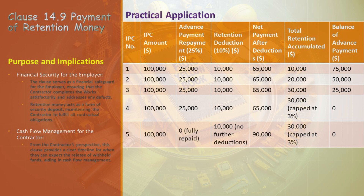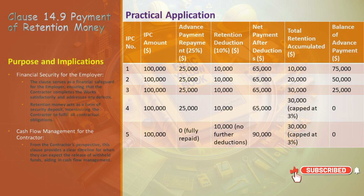IPC number one: the IPC amount is $100,000. A substantial 25%, amounting to $25,000, is methodically deducted for repaying the advance payment — a financial lifeline extended to the contractor for initial mobilization. Simultaneously, 10%, or $10,000, is retained as a quality assurance measure. The contractor receives $65,000, but this is a tale of trust and accountability, where every dollar retained reinforces the commitment to excellence.